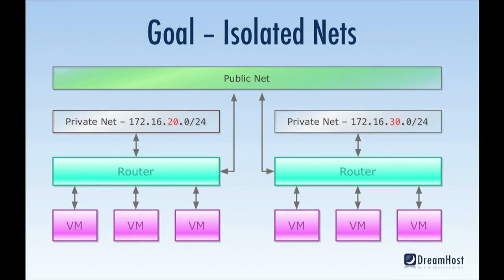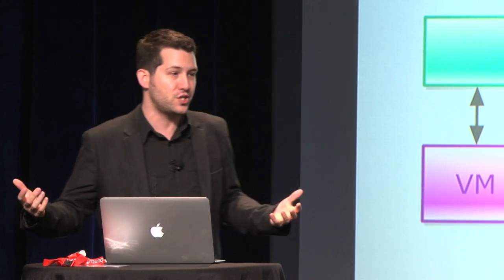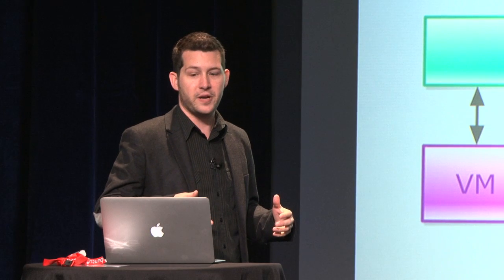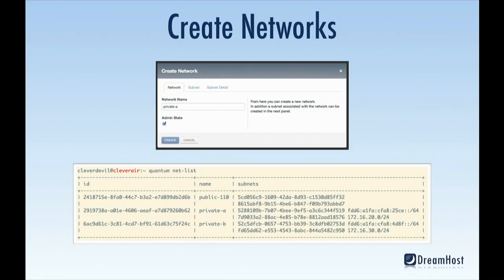So what am I going to show you today? I'm going to demonstrate a fairly straightforward network topology. I'll create two private virtual networks on two different subnets — 172.16.20 and 172.16.30 — then create two virtual routers, plug them into those private networks and the public internet network, and spin up virtual machines connected to those routers. This gives two isolated networks — maybe hosting two customers with similar or different applications in one cloud, completely isolated from a network perspective. I'll show you how to do this both through the user interface and through the APIs.